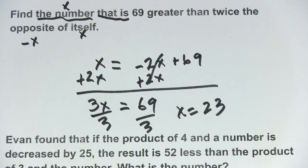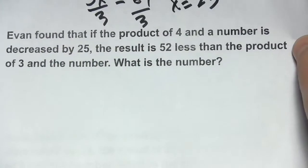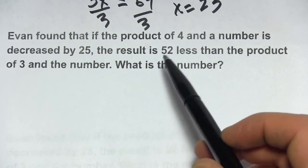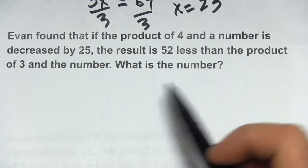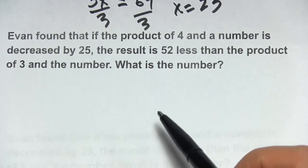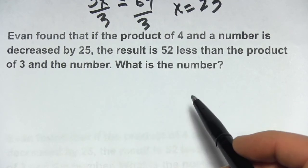All right, let's try another one. So this one says, Evan found that if the product of 4 and a number is decreased by 25, the result is 52 less than the product of 3 and the number. What is the number?